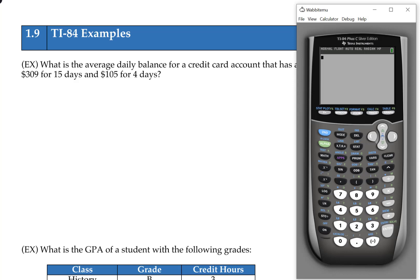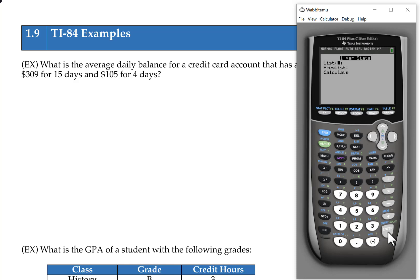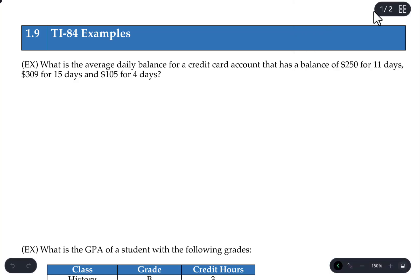The only difference when we go to OneVarStats is you get two options in the menu that shows up: where the list of data is that you're working with, and also the frequency list. If you indicate that you have frequencies in another list, it will start doing weighted stats instead. It's pretty straightforward. Let's take a look at some examples.